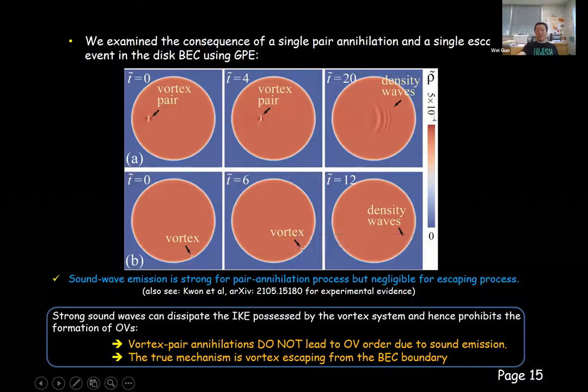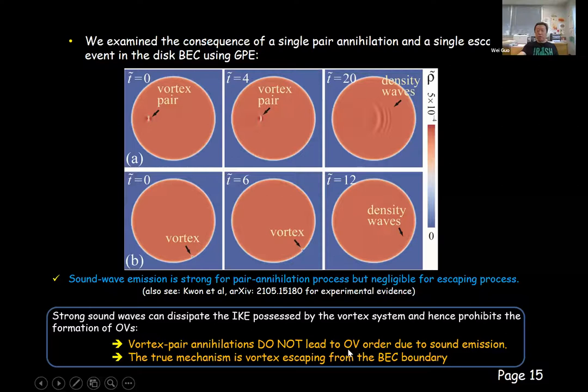This observation leads to two conclusions. First, pair annihilation — essentially the evaporative heating mechanism — does not lead to spontaneous formation of Onsager vortex order because of sound wave emission. Second, the true mechanism responsible for the appearance of Onsager vortices is the vortices escaping from the BEC boundary.